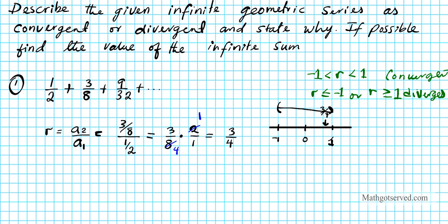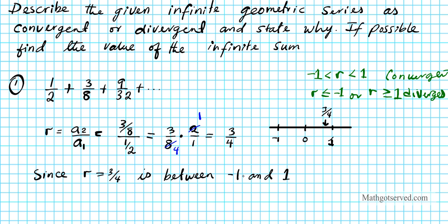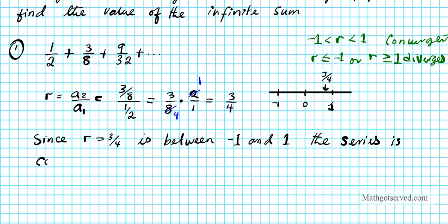Since r equals 3/4 is between negative 1 and 1, the series is convergent and the sum exists.